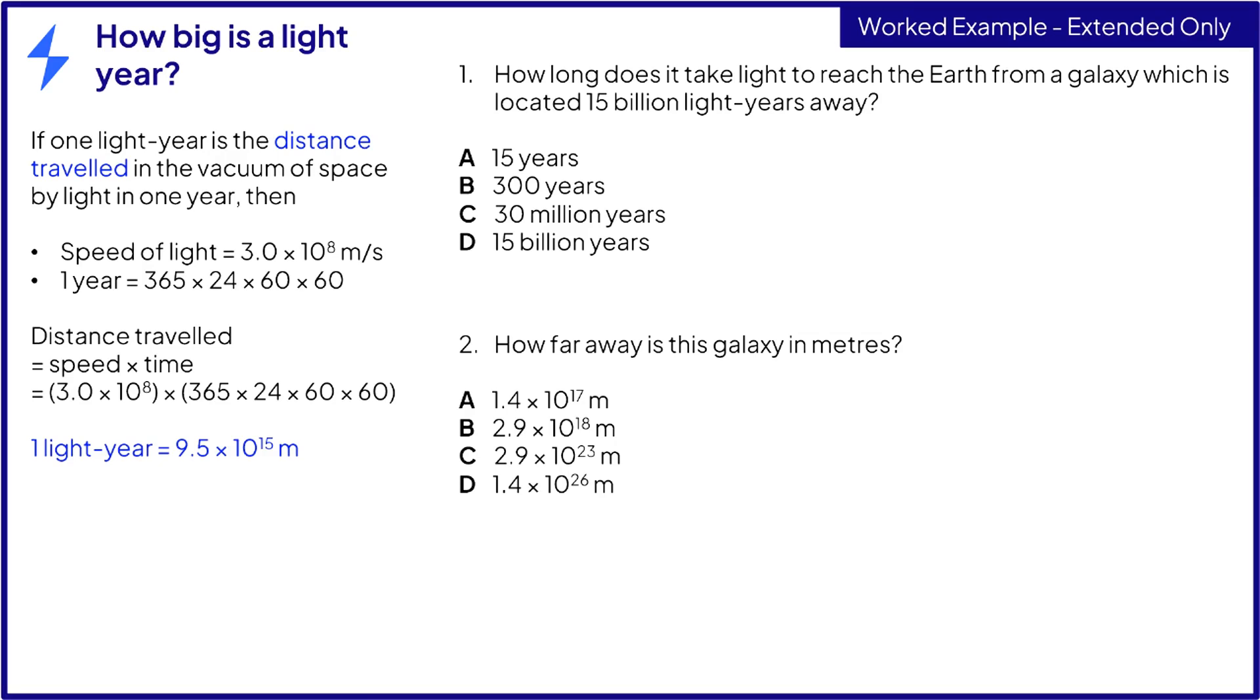Let's see what a question on this might look like. How long does it take light to reach the Earth from a galaxy which is located 15 billion light years away? A light year is the distance light travels in a year, therefore the only answer can be D, as light will take 15 billion years to travel a distance of 15 billion light years.